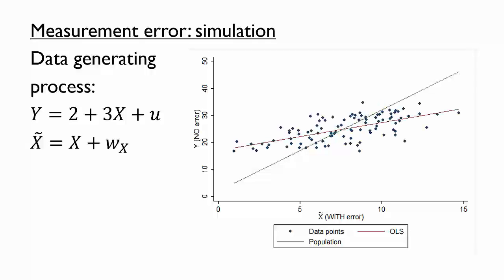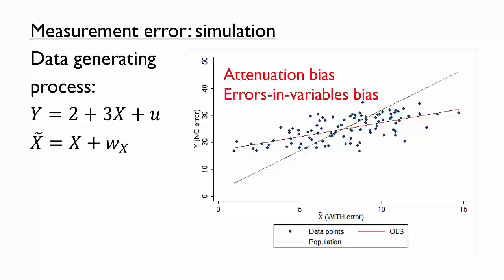Take a moment to convince yourself that going from the original x to the error-prone x results in a shallower slope. You might imagine that the more measurement error in x, the shallower the slope will get. We call the result attenuation bias. Attenuation refers to the fact that the slope gets attenuated or biased towards zero. Sometimes this is also called errors in variables bias.